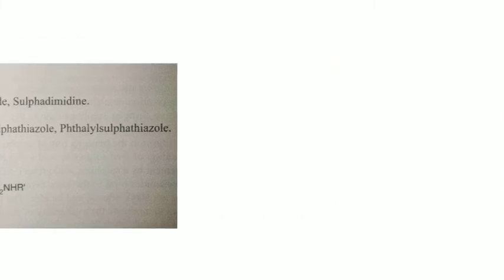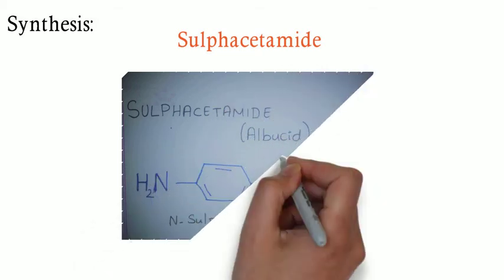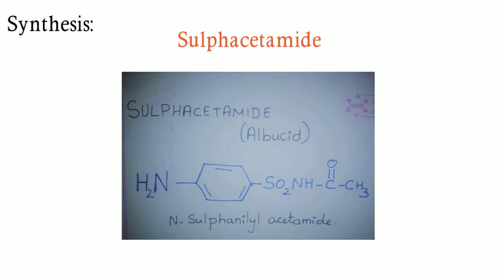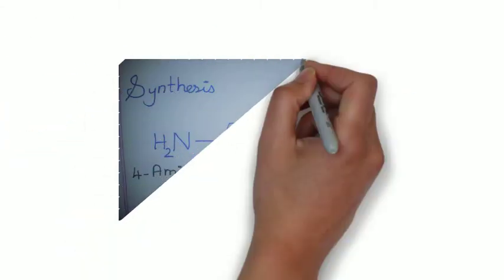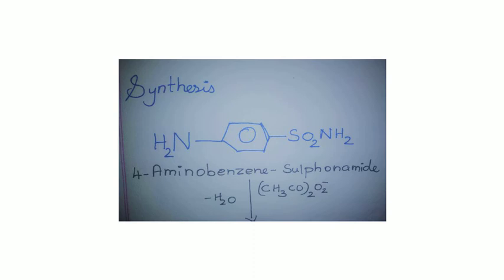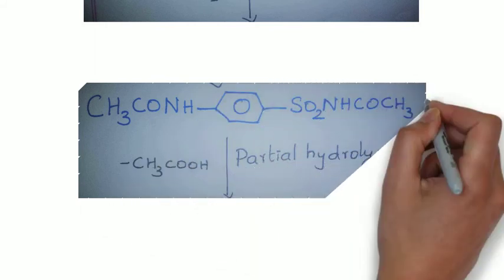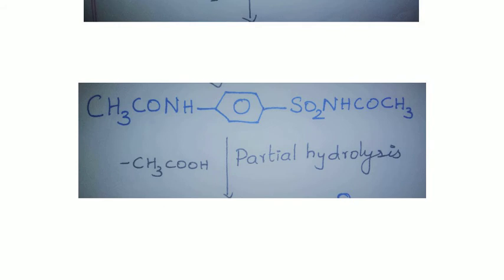Moving on to the synthesis part, we will first see the synthesis of sulfacetamide, otherwise known as Albucid. It is a sulfonamide antibiotic used for the treatment of bacterial infections of the eye. The starting material is 4-aminobenzene sulfonamide. By treating it with acetic anhydride, we lose a water molecule and obtain an intermediate. By treating that intermediate with water — that is, by partial hydrolysis — acetic acid is removed from the intermediate and we obtain the product sulfacetamide.